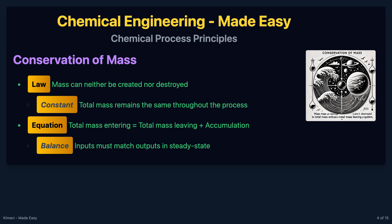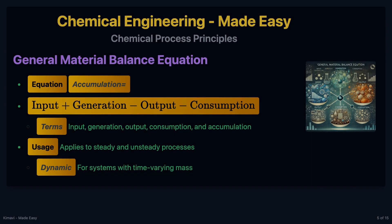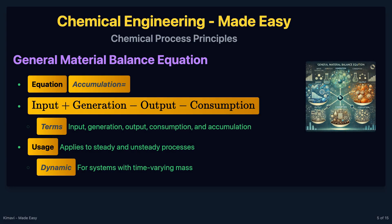The law of conservation of mass states that mass can neither be created nor destroyed in a chemical process. Therefore, the total mass entering a system must equal the total mass leaving the system plus any accumulation within the system. The general material balance equation for any process can be written as input plus generation minus output minus consumption equals accumulation.